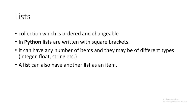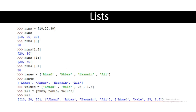Now let's start with the list. A list is a collection which is ordered and changeable in Python. Lists are written with square brackets. They can have any number of items and may have different data types — integer, float, string, etc. A list can also have another list as an item, so we can create a list within a list.